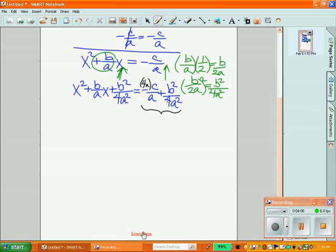So I'm going to rewrite the whole equation now as x squared plus b over ax plus b squared over 4a squared equals, now that's going to be negative 4ac plus b squared all over 4a squared.